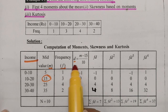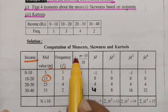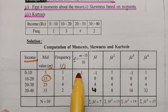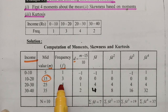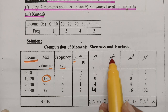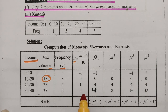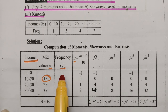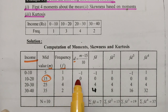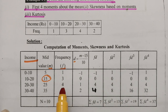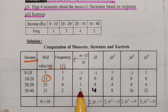After getting d, we compute fd: 1×(−1) = −1, 3×0 = 0, 4×1 = 4, 2×2 = 4. Then for fd², we compute d² values (1, 0, 1, 4) and multiply by frequency: 1×1 = 1, 3×0 = 0, 4×1 = 4, 2×4 = 8.